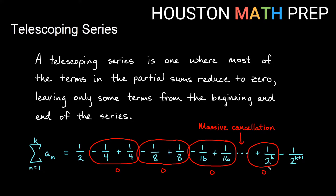This positive fourth reduced with the term before it, this positive eighth reduced with the term before it, this positive sixteenth with the term before it, so this positive 1 over 2k with the term before it. This negative term, in order to reduce, would need a term after it, so it doesn't really have anything to reduce with. So I get this positive half here, and I get this minus 1 over 2 to the k plus 1 at the end.